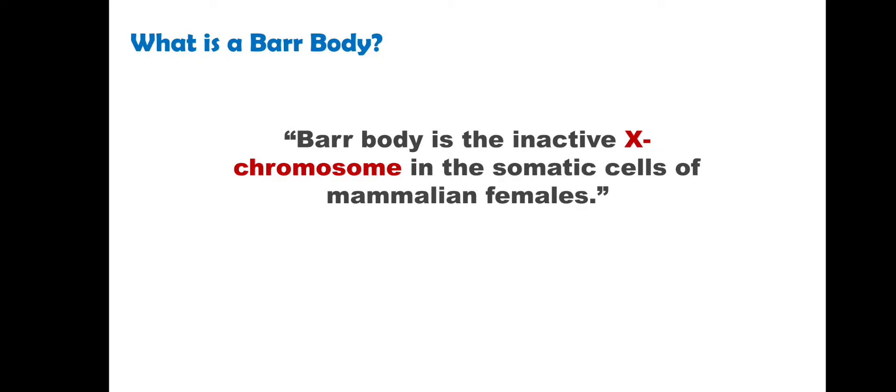We have already discussed about chromosomes. Human beings have 46 chromosomes — 23 pairs of chromosomes. 22 pairs, or 44 chromosomes, are autosomes. 1 pair, or 2 chromosomes, are sex chromosomes. The sex chromosomes in males and females are different. Females have two X chromosomes (XX), and males have one X and one Y chromosome (XY). So Barr body is the inactive X chromosome in the somatic cells of females.